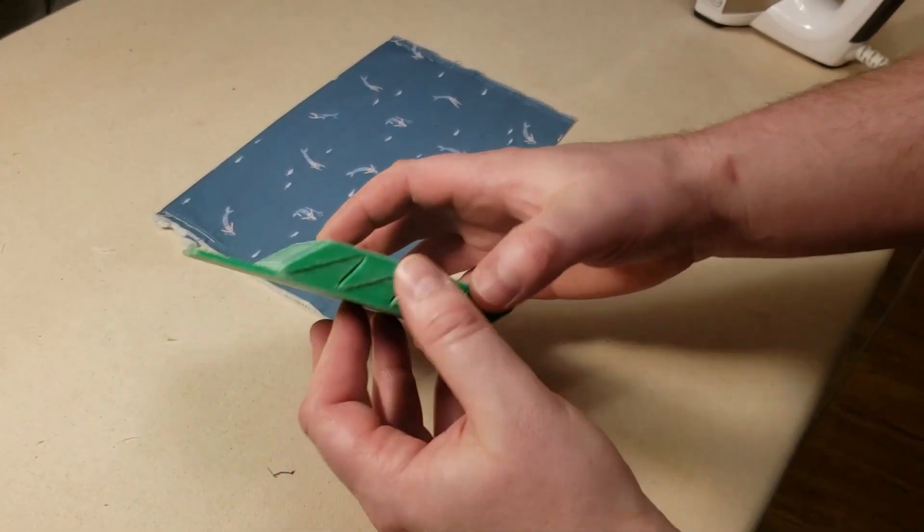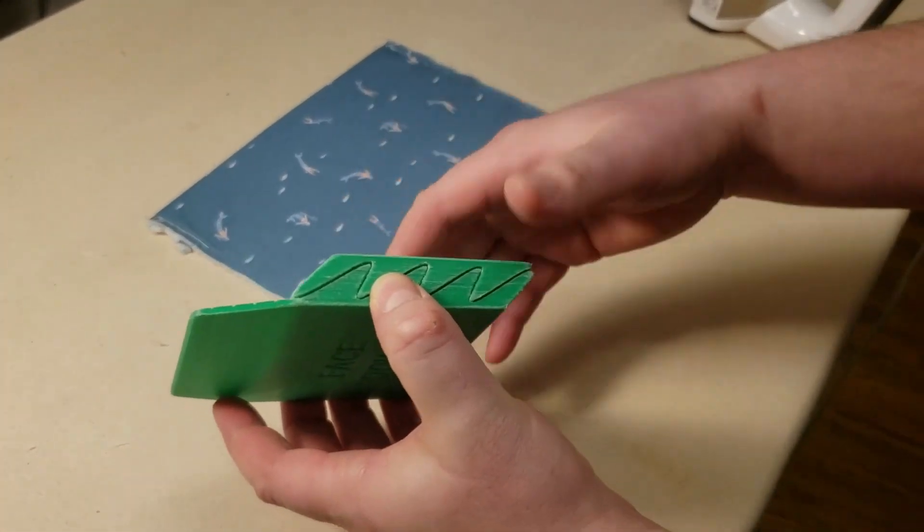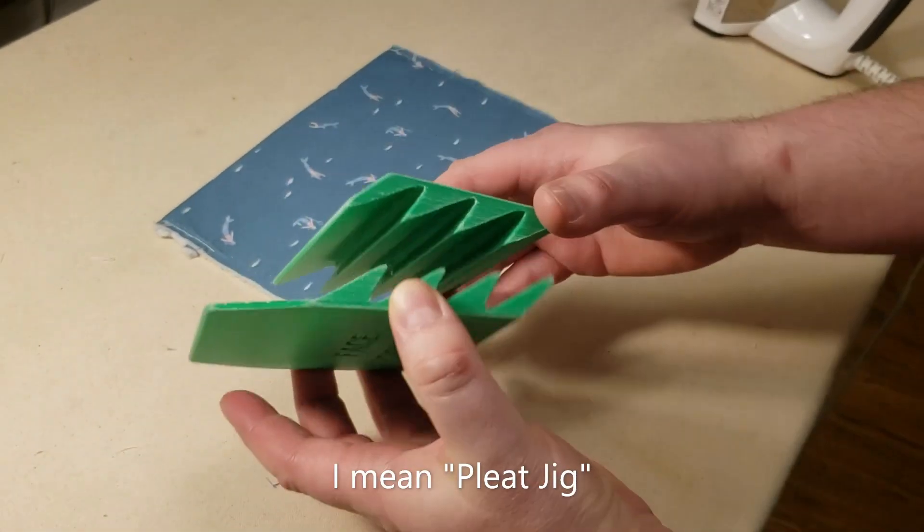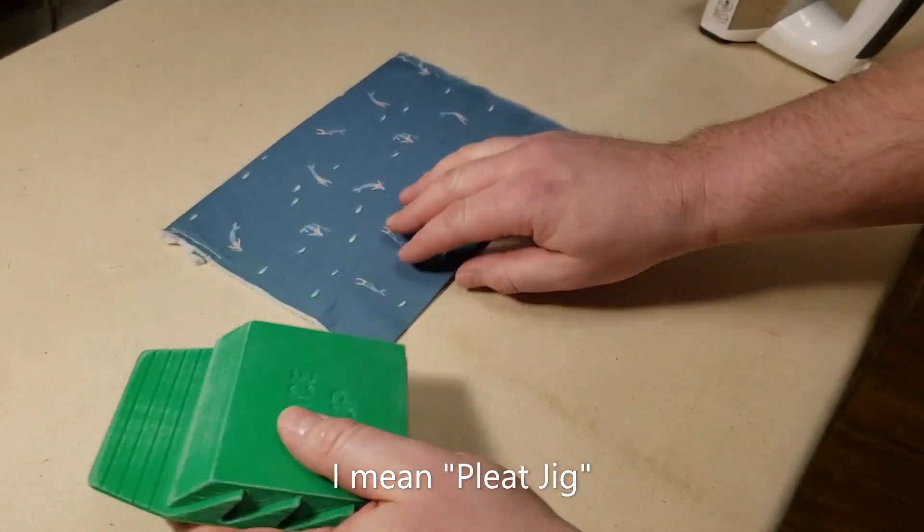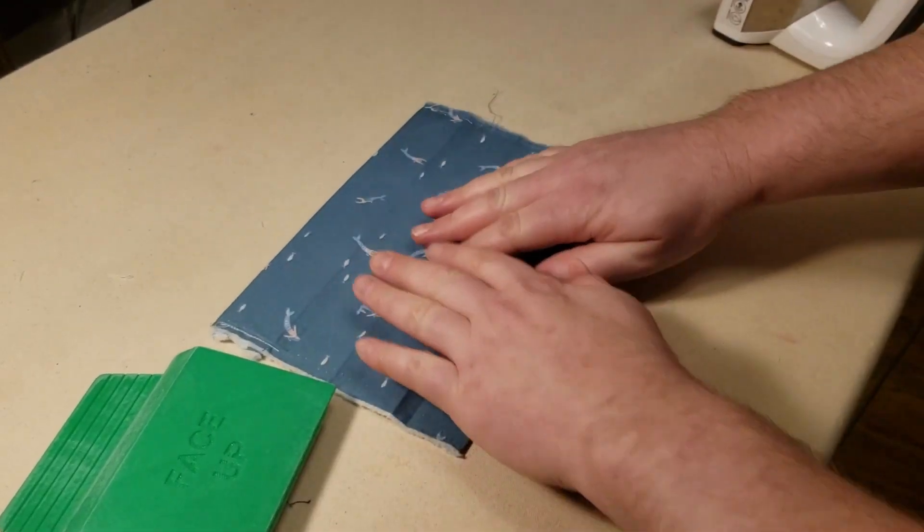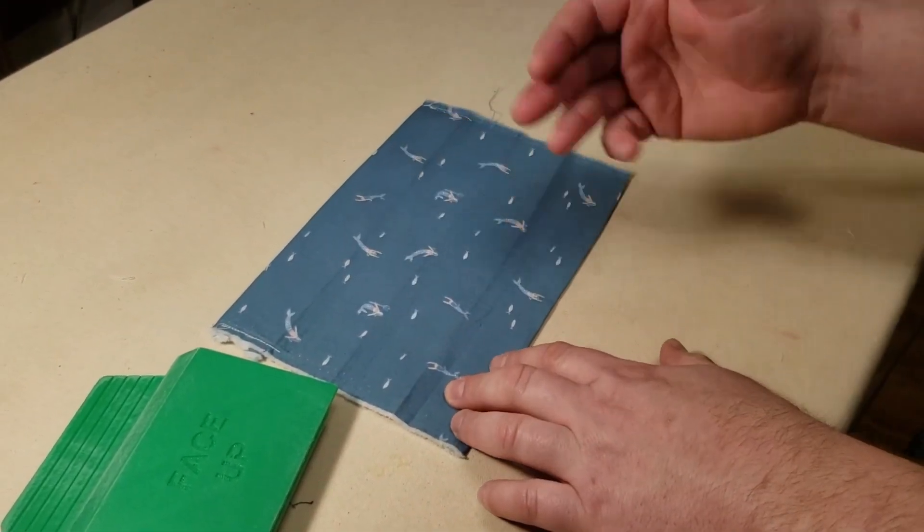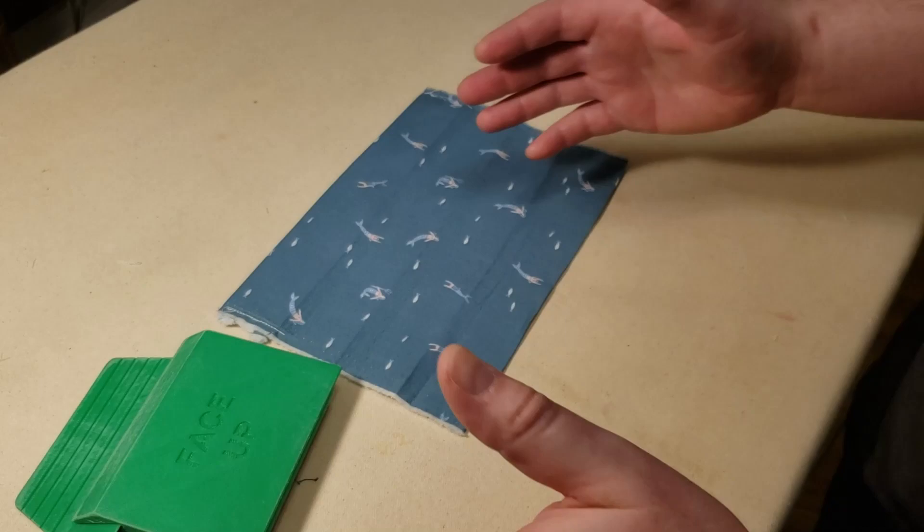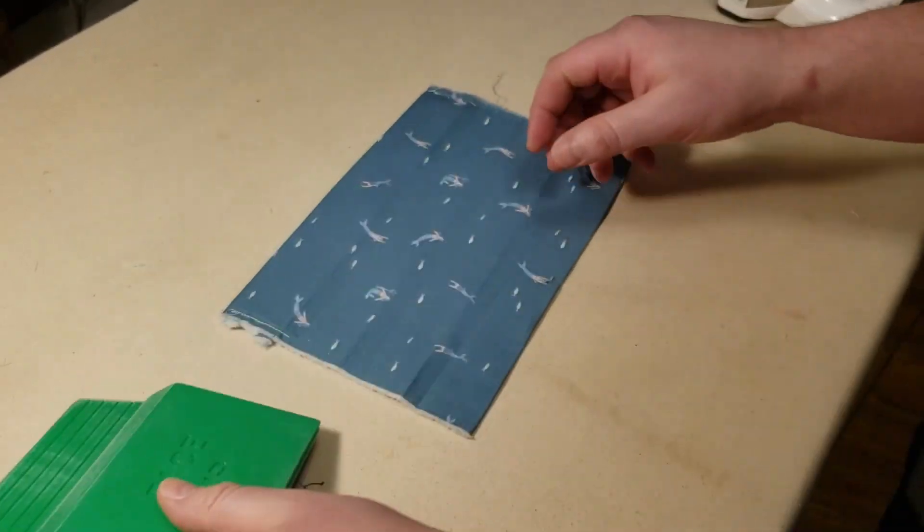Hey everybody. Today we're going to show you how to use this face mask pocket pleater. It's basically two pieces and it's designed to pleat your masks. A lot of people are making masks right now and the pleating, the folding down, is actually kind of hard to do or it takes a while. So this device helps you out with that.